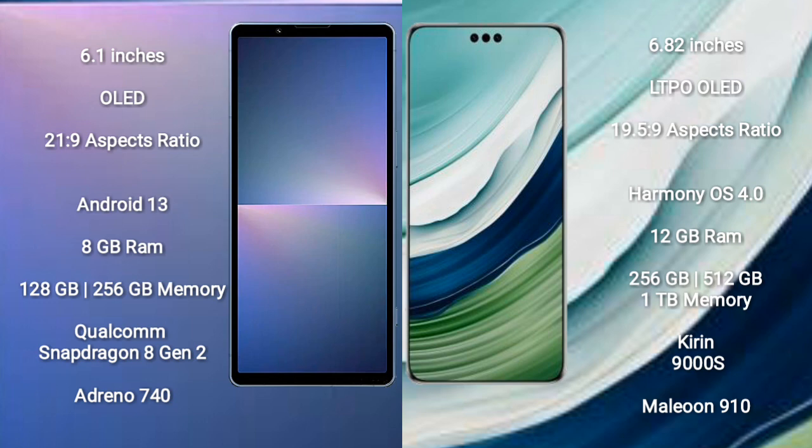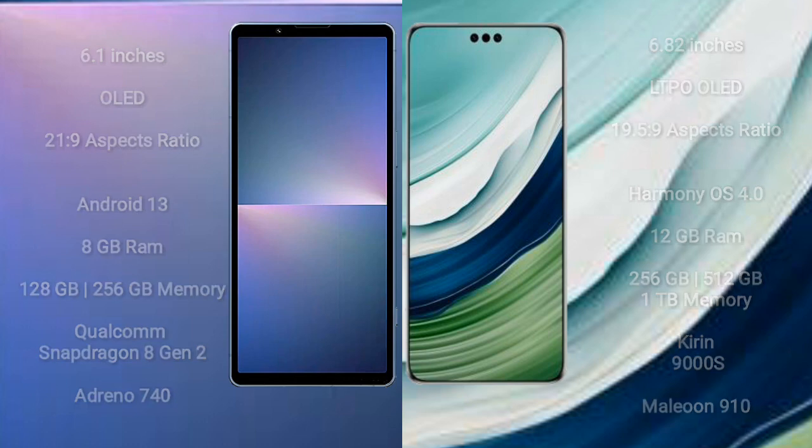The Sony Xperia 5 Mark 5 comes with 8GB RAM and 128GB to 256GB internal storage, powered by the Qualcomm Snapdragon 8 Gen 2 processor with an Adreno 740 GPU. The Huawei Mate 60 Pro comes with 12GB RAM and 256GB, 512GB, or 1TB internal storage, powered by the Kirin 9000S processor with a Maleoon 910 GPU.